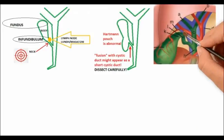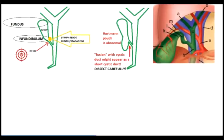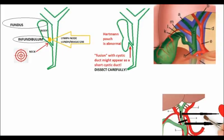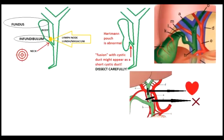Observe the portal triad. The portal vein is posterior. There are two structures anteriorly: bile ducts are lateral and blood vessels are medial. The common bile duct is supplied by the 3 and 9 o'clock arteries. Vertical incisions will not compromise the blood supply, but horizontal incisions will.